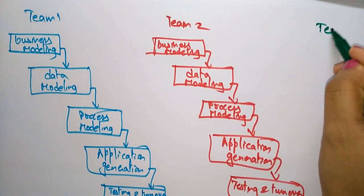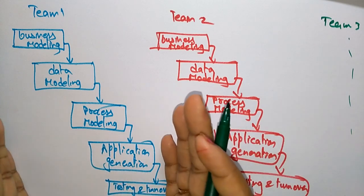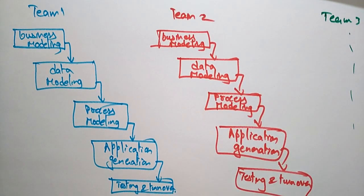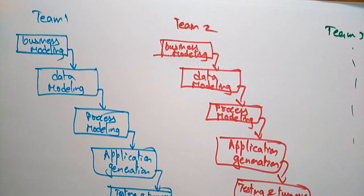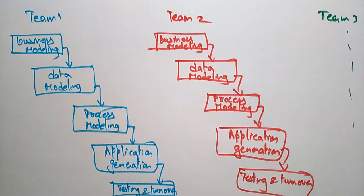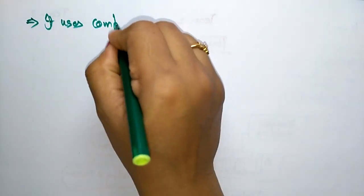In the same way Team 2 and Team 3 follow the same process. The RAD model uses multiple teams on scalable projects. Whatever project they are given is divided into teams, and each team performs its own functions to implement its module. It is just like an incremental model, but the main difference is that RAD is used only for small projects — those that need to be submitted within a cycle of 60 to 90 days.